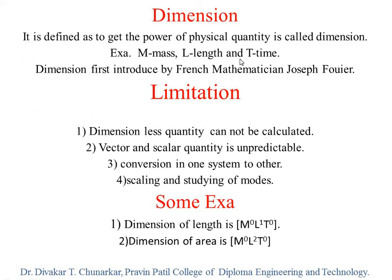The dimensional formula is obtained by writing quantities in power form inside square brackets. This is very important — the dimensional formula is written in square brackets using the first capital letter of each physical quantity.